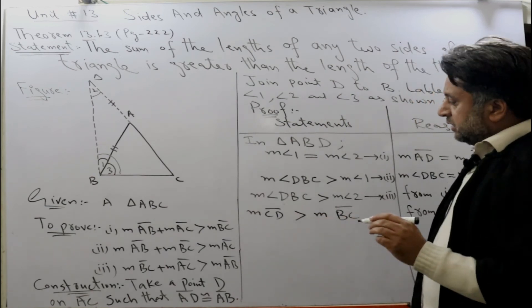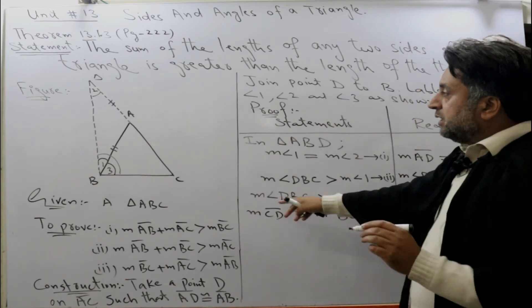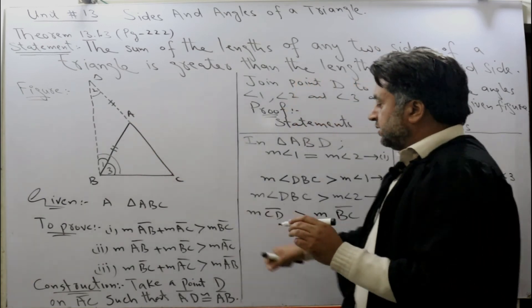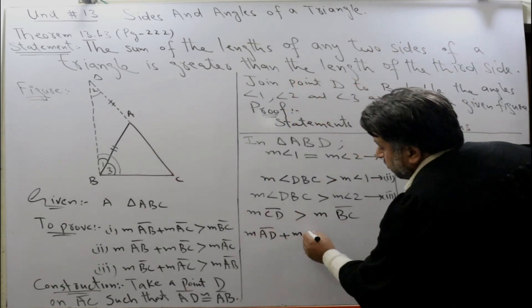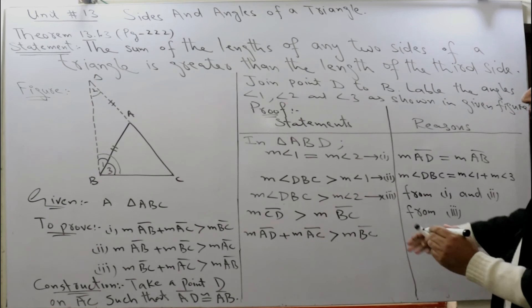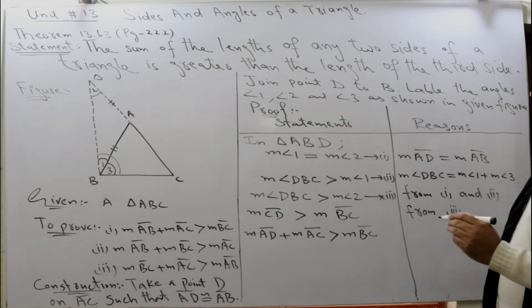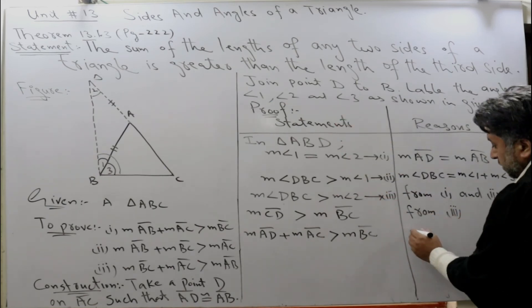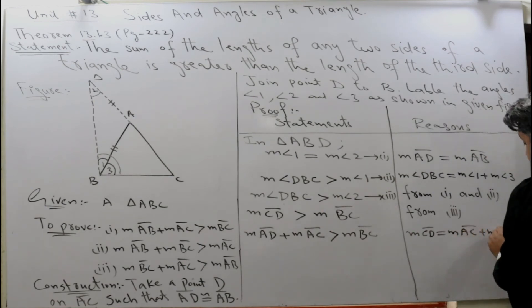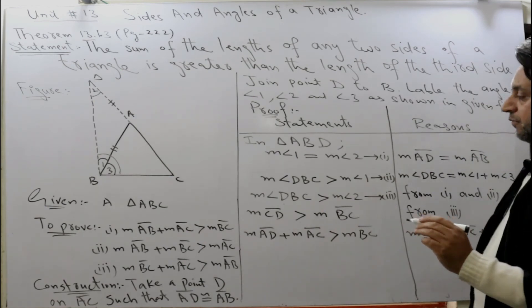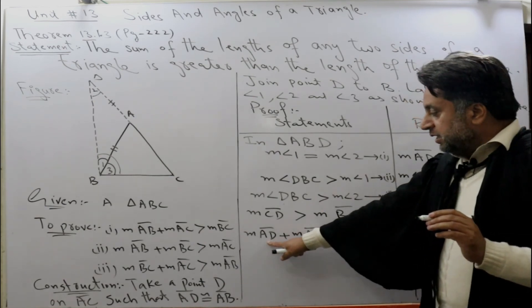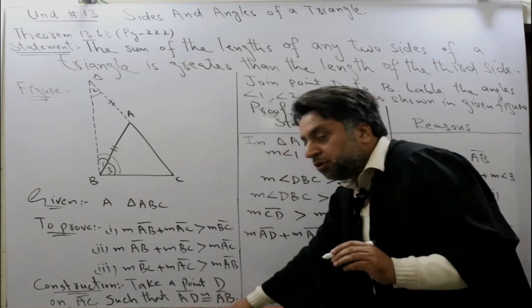From the figure, it's clear that CD equals AD plus AC. And from the figure, AD equals AB.